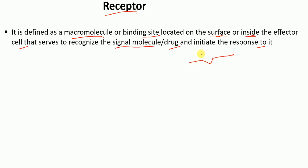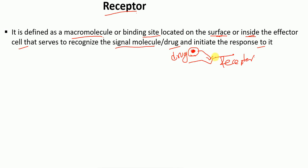So what does the receptor do? The receptor recognizes — let's say this is a drug molecule or the signaling molecule — so the receptor actually recognizes this drug molecule. And the receptor recognizes this drug molecule or the signaling molecule and initiates the response to it. So it's a macromolecule or a binding site.